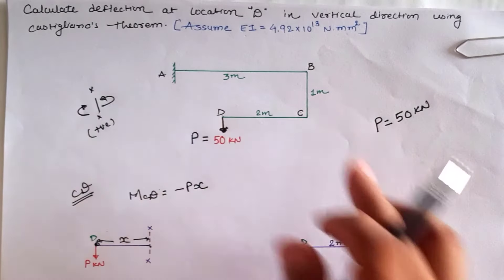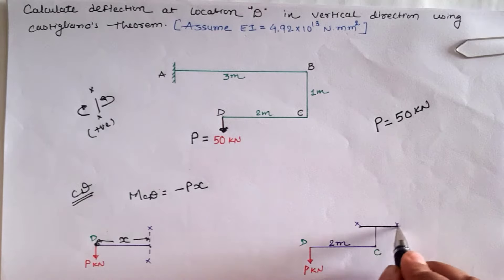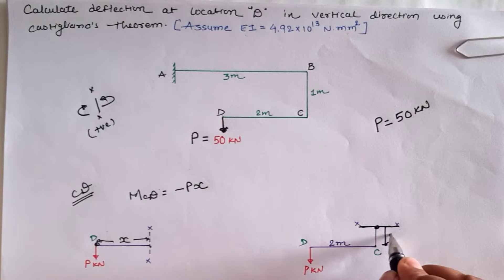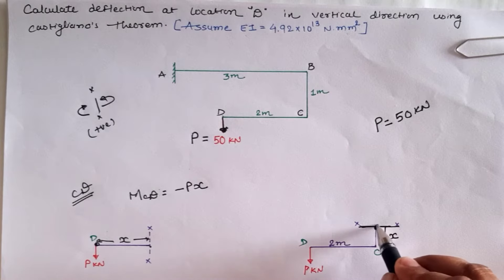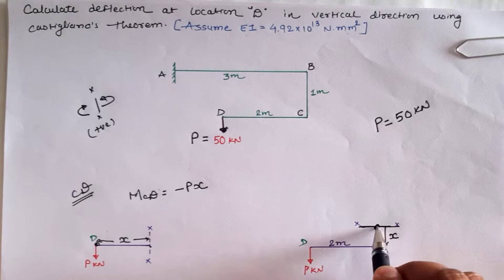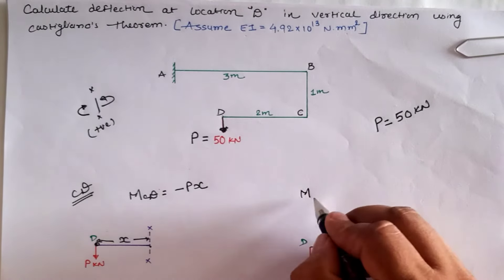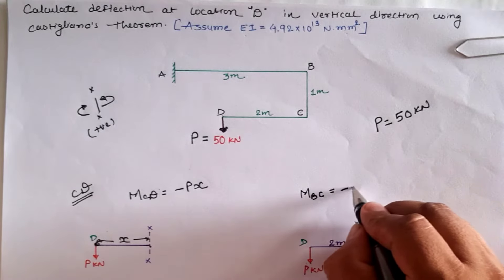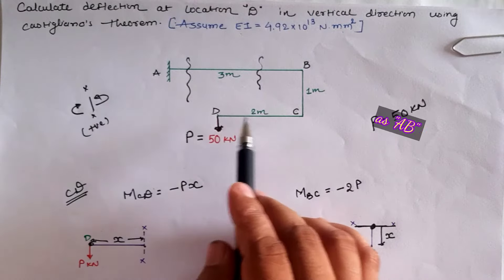For the B to C segment, taking C as the origin with sectional distance x from location C, if we take the moment over section x it is P into 2 in the anticlockwise direction. So for the B to C segment, the moment is minus 2P.